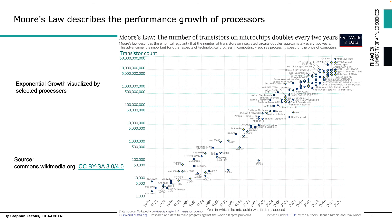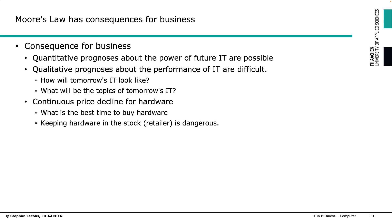Moore's Law has consequences for business. On one hand, we can make a good quantitative prognosis about how IT will look in the future, at least regarding performance. However, people are not made to think in exponential growth — we think linearly. So even if we know quantitatively how a computer will look, we have no clue how to use it or how it will change the way IT is used. Think about your computer in 2037 — what will you do with it? Also, due to constantly declining hardware prices, it's worth asking: when is the best time to buy hardware? Retailers in Aachen went bankrupt because they cheaply bought large amounts of hardware but couldn't sell it fast enough — and hardware simply loses value.